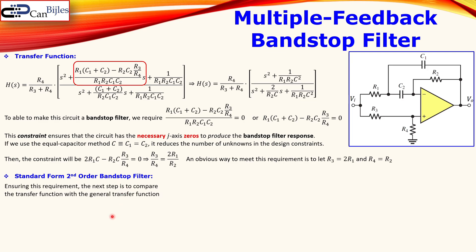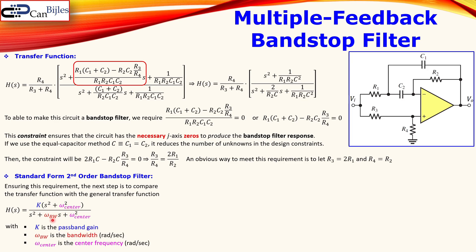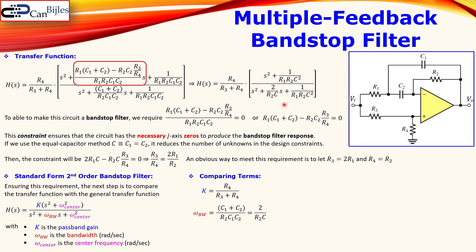The standard form of a second-order band stop filter has the passband gain K, the center frequency omega_0, and the bandwidth omega_BW — both in radians per second. Comparing this with our circuit's transfer function: K equals R4/(R3 + R4), omega_BW equals 2/(R2·C), and these terms match exactly.